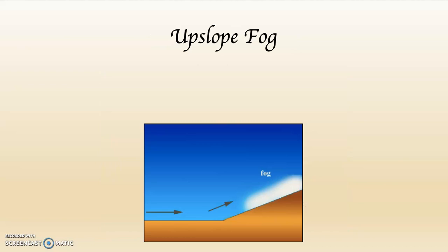The last of the fogs is upslope fog. You can see with this diagram — not the greatest diagram in the world, but it'll do. Air is flowing along from left to right. As the air is flowing along, it hits the mountain. When it begins to rise up along the slopes of the mountain, the temperature of the air drops. When air temperature goes down, relative humidity goes up. And at some point, the air temperature reaches dew point temperature, and when that happens, the fog forms.